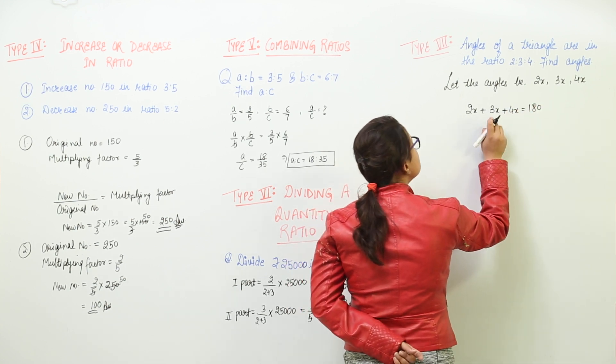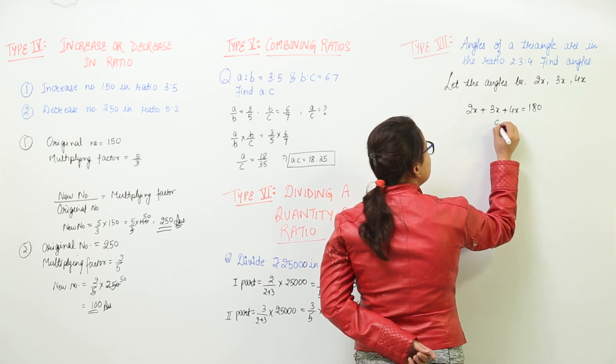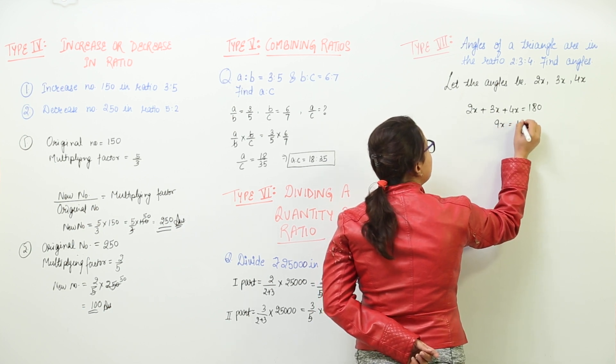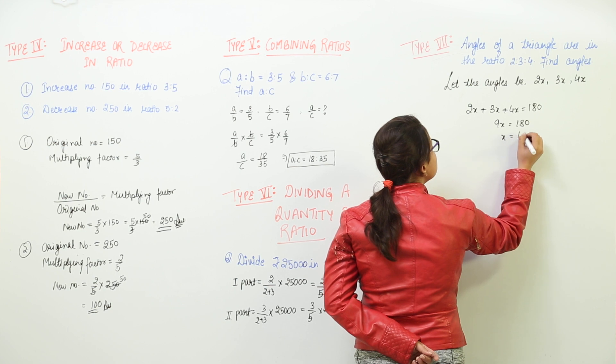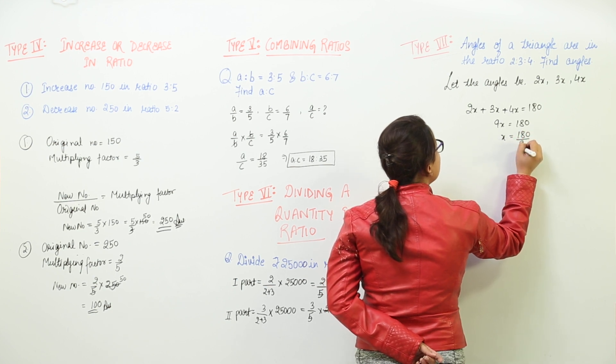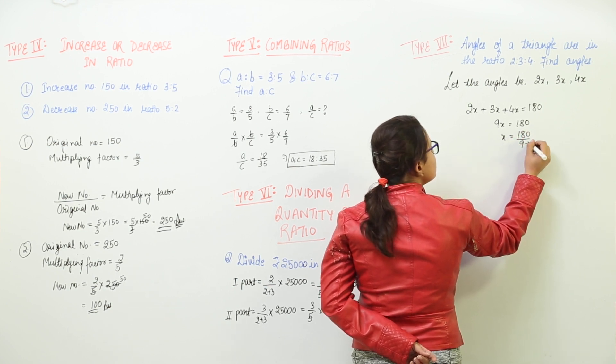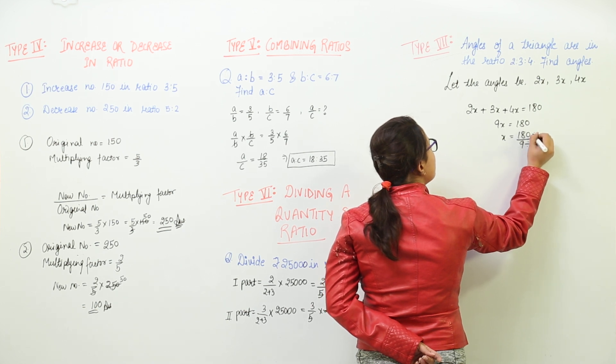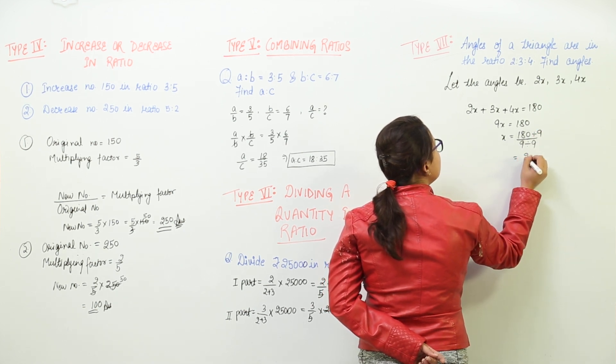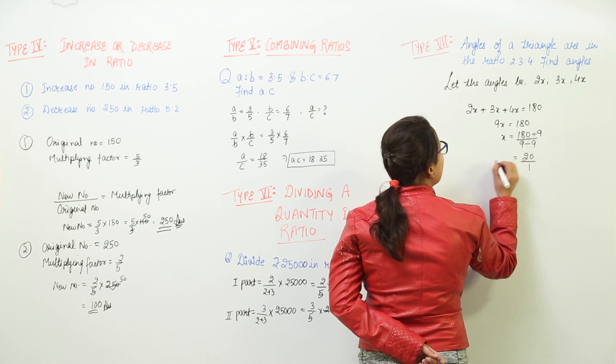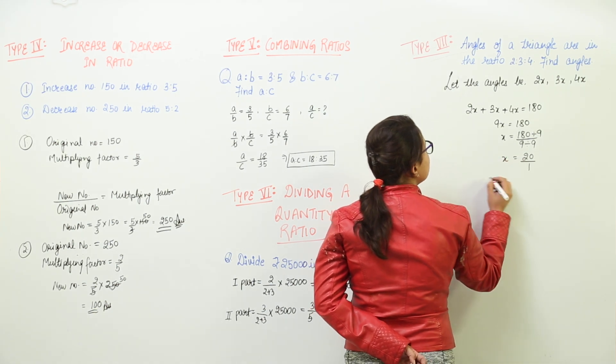We solve this: 4 plus 3 is 7, 8, 9. So 9x is equal to 180. x is equal to 180 over 9. Because this ratio is having some factor common, we divide it with the common factor and we get 20 over 1. So x comes out to be 20.